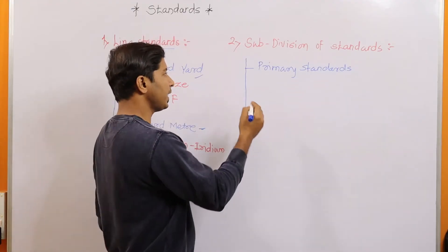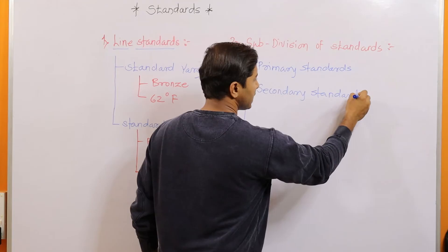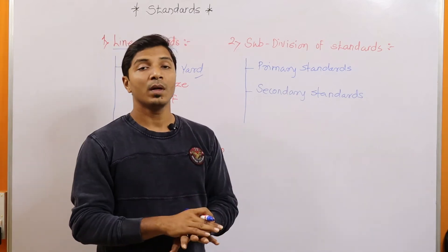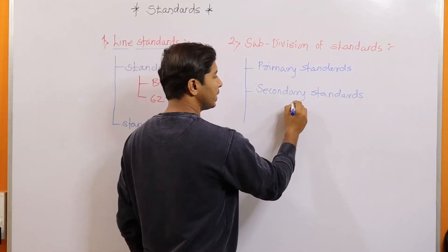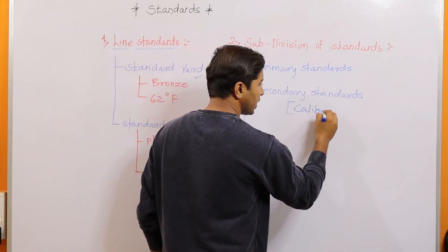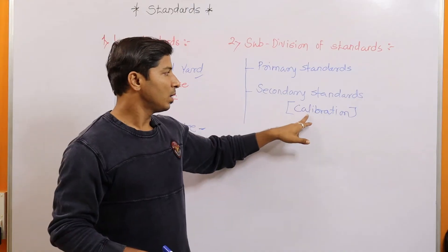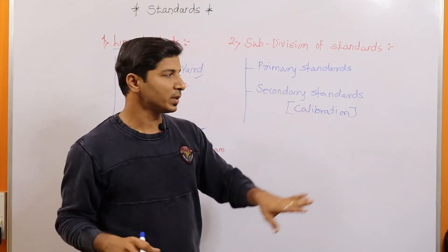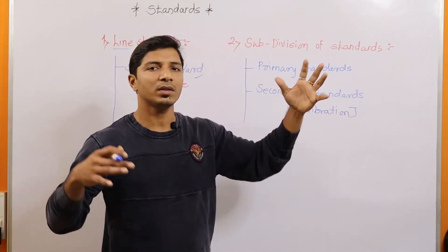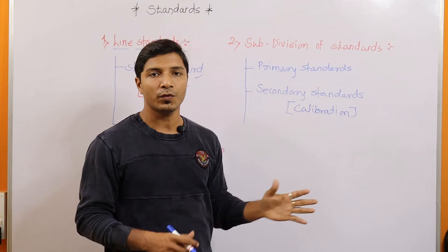The second category is secondary standards. These standards are also preserved in careful conditions and are not for ordinary or frequent use. These can also be called calibration standards, because they are used for calibration purposes — to check the accuracy of instruments. These standards are not widely used in industries. They are preserved in standard labs, and whenever instruments require calibration, these secondary standards are used.